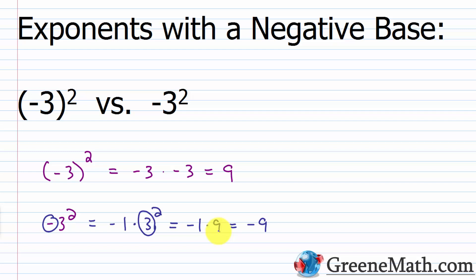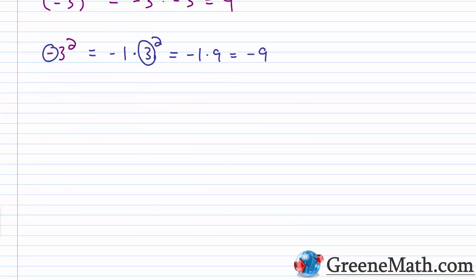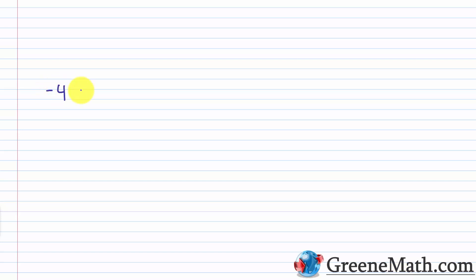If you don't believe me, punch up negative 3 and then square it on your calculator — it will give you negative 9. Then wrap negative 3 in parentheses and square that, and you'll get positive 9. Now, something important to understand: exponents with a negative base only produce a different result depending on whether the exponent is even or odd. If we think about something like negative 4 cubed versus negative 4 cubed with parentheses, we're going to end up with the same answer.